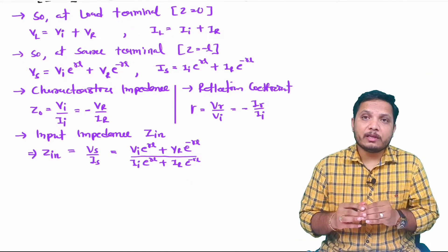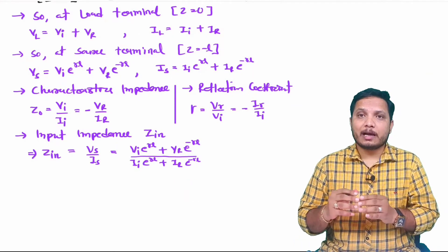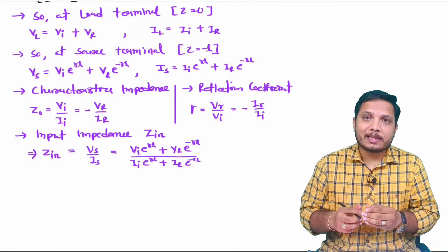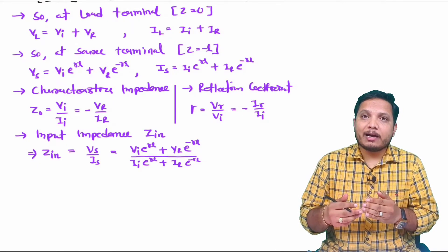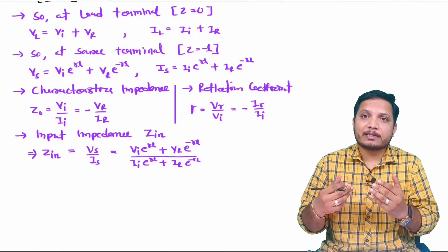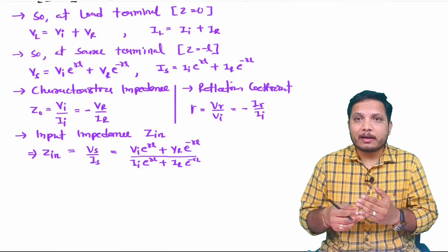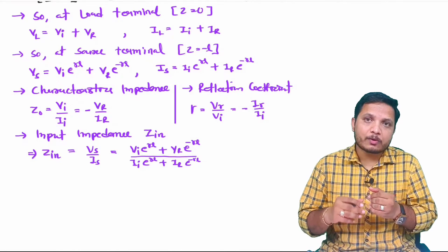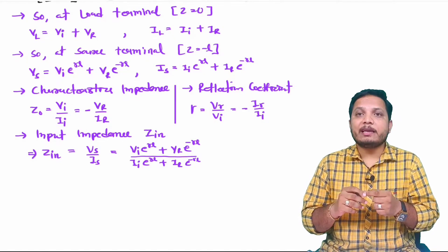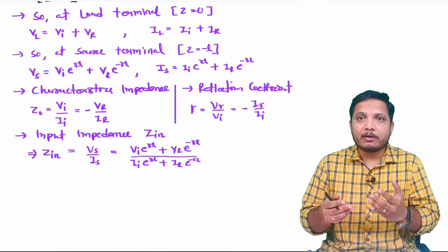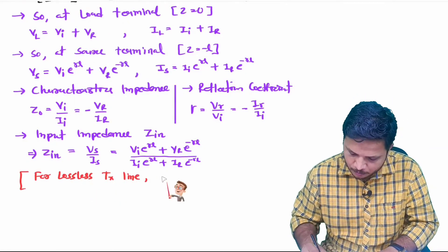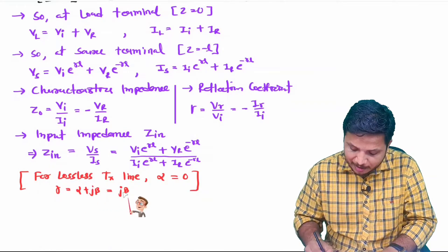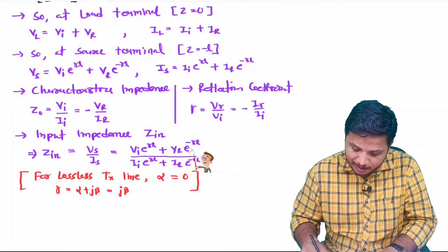For further derivation of input impedance, I will consider a lossless transmission line. For a lossless transmission line, gamma equals alpha plus j·beta, where alpha equals zero. Therefore, gamma can be replaced by j·beta for the lossless case.